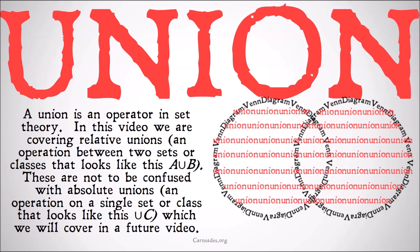A union is an operator in set theory. In this video we are covering a relative union, which is an operator between two sets or classes that looks like this: A∪B. These are not to be confused with absolute unions, an operation on a single set or class that might look like this: ∪C, which we will cover in a future video. So if you're looking for that, check out that future video. If you're looking for unions between two sets, you're in the right place.